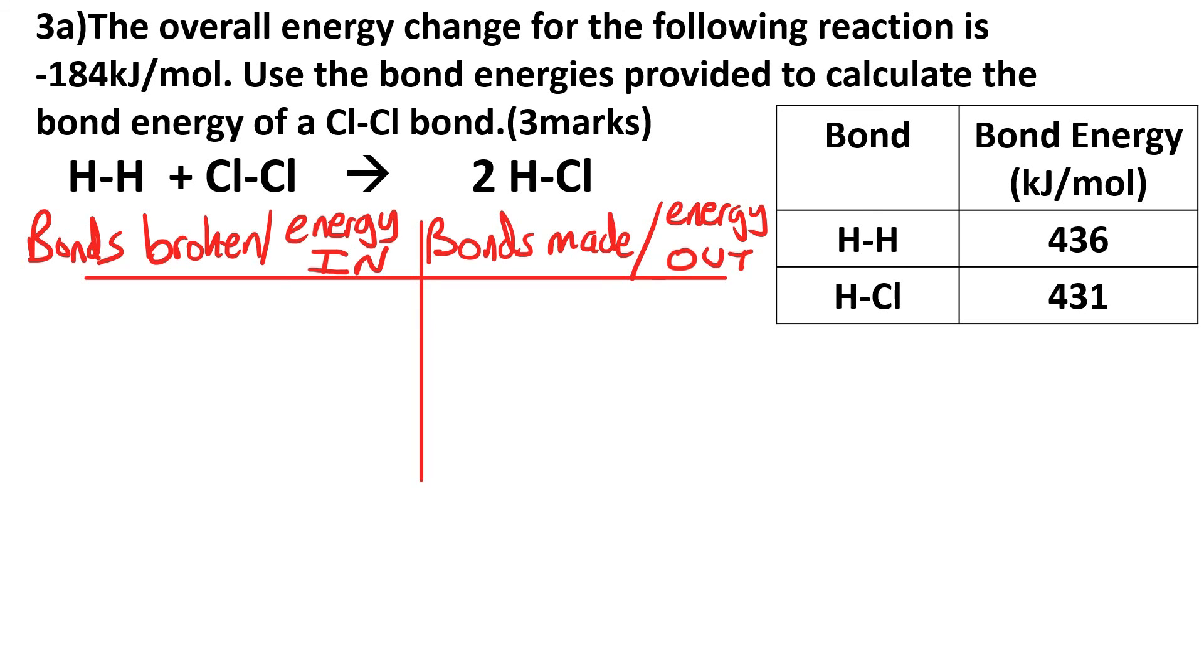We still set it out the same. The bonds broken on the left and the bonds made on the right. On the left, we can see we're breaking an H-H bond, which is 436 kilojoules per mole. And we're also breaking a Cl-Cl bond, but that's the one we need to work out.